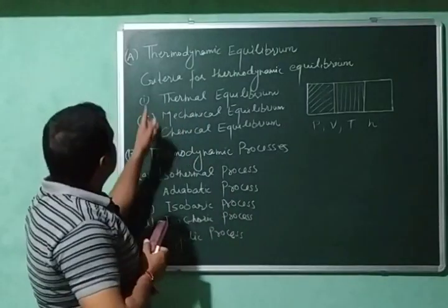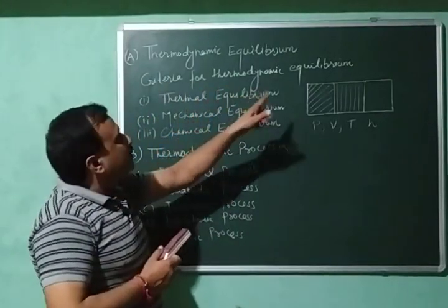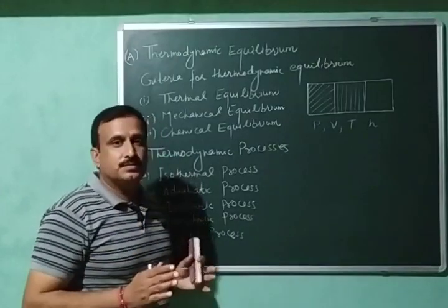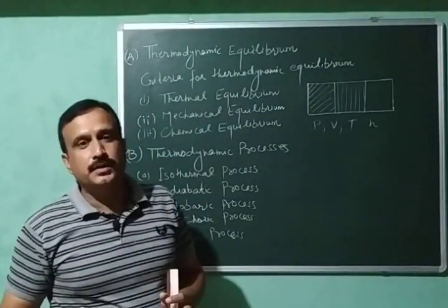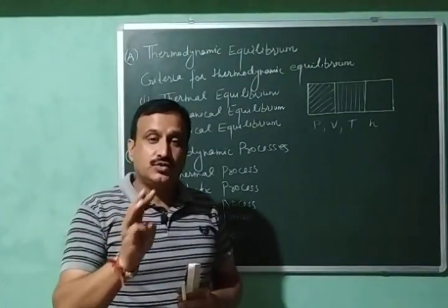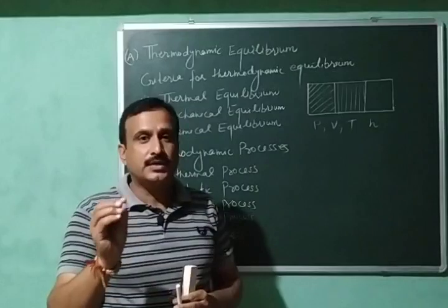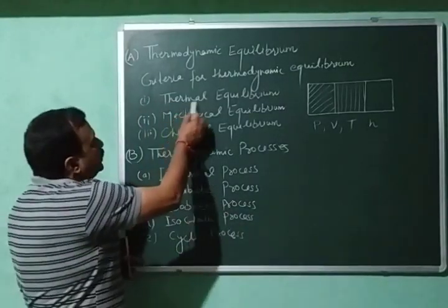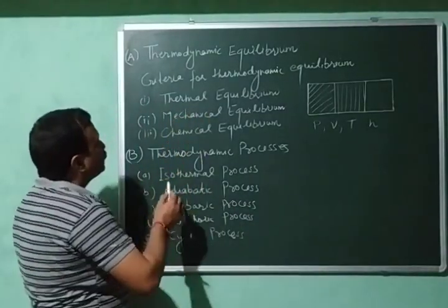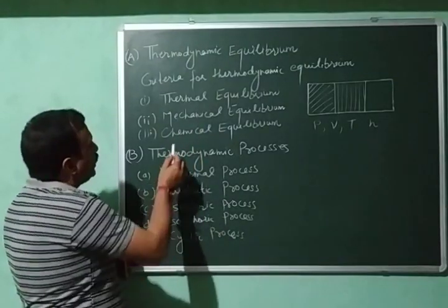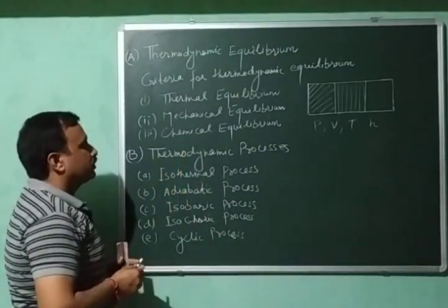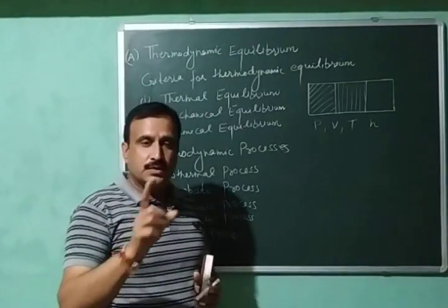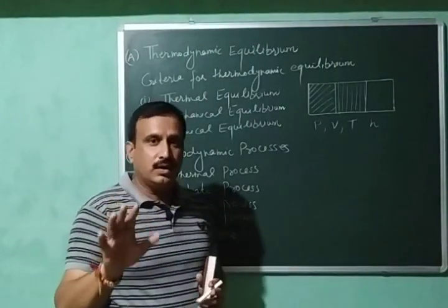So next are the criteria for thermodynamic equilibrium. For a system to be in thermodynamic equilibrium, it has to attain three different types of equilibria: number one is thermal equilibrium, then mechanical equilibrium, and chemical equilibrium. So let us discuss these equilibria one by one.